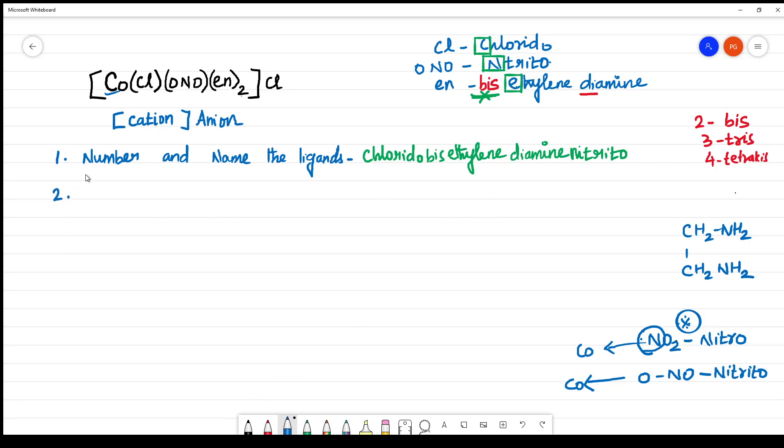The next one is you have to name the central metal atom. What is the central metal atom? The central metal atom is cobalt. You have to name as such cobalt. See, if the complex is anion, only if the complex is anion, this central atom should end with 'ate'. Here the complex is cation, so you have to name the normal central atom.